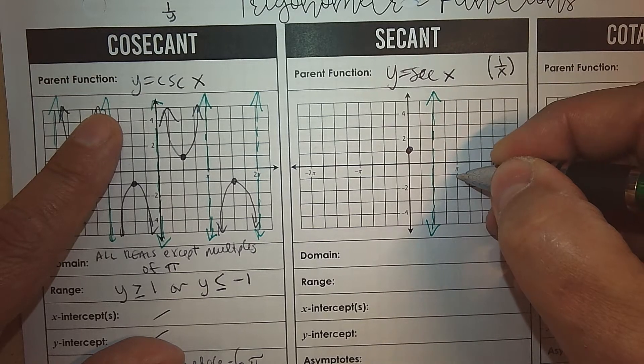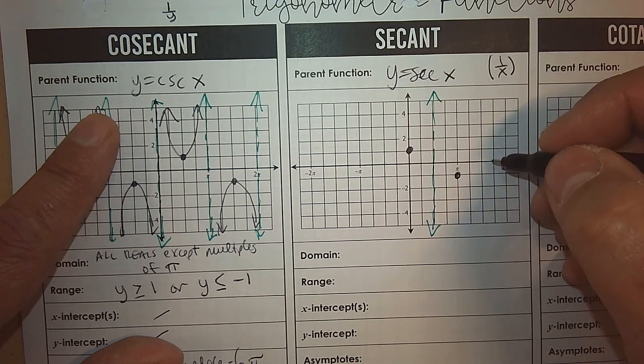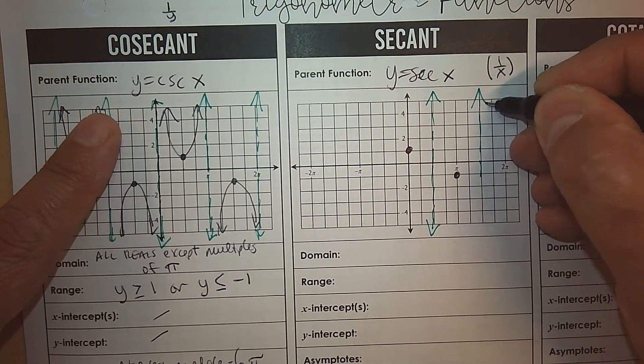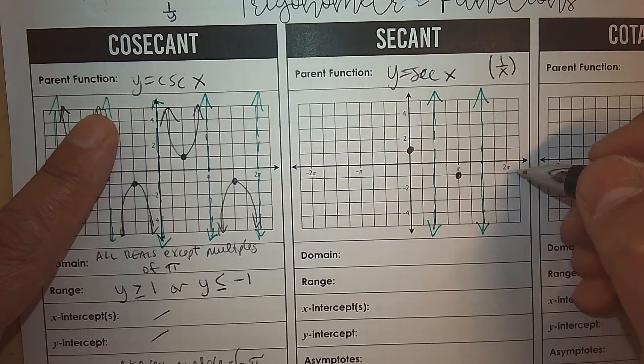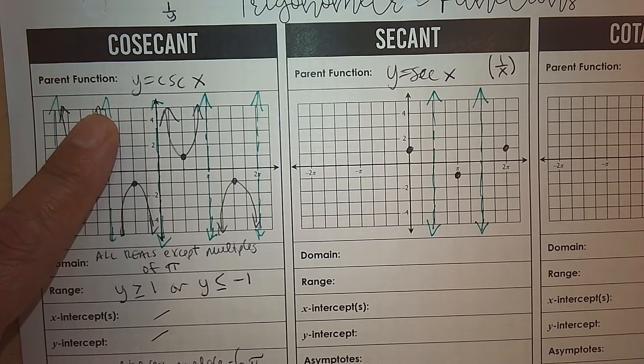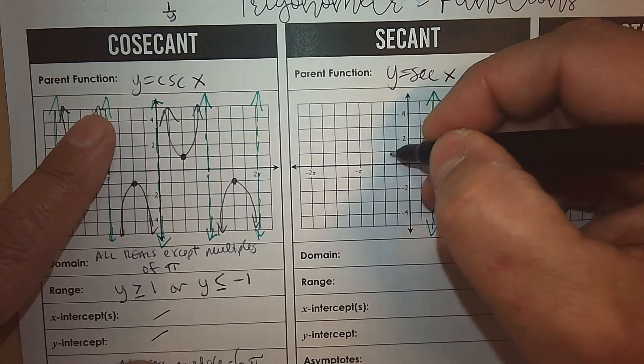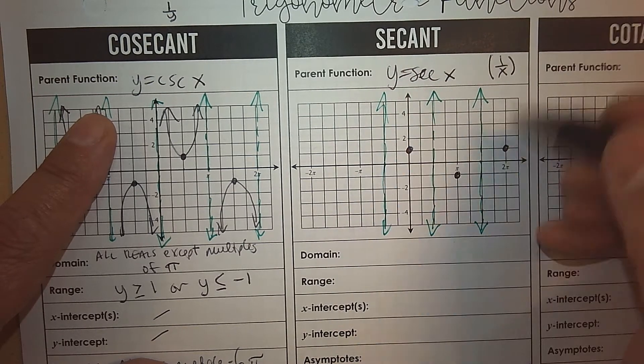At pi, it's going to be negative 1, and the reciprocal of negative 1 is negative 1. At 3 pi over 2, the x-coordinate is 0, and the reciprocal of 0 is 0. And at 2 pi, we're back again here. So you can see a pattern here. So we're going to follow that pattern, both right and left. And notice, again, these points oscillate.